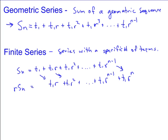Well, the reason we do that is that we want to subtract the two sequences. And if we subtract these two sequences, we get, on the left side, SN minus RSN. Which equals, well, all these terms cancel out. And so, you're left with T1 minus T1R to the N.